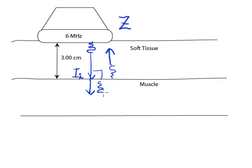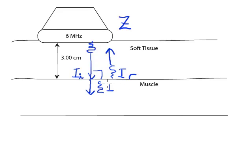The transmitted part will keep going down through the next level of tissue. It's this reflection that the transducer is going to be able to detect and plot, and that's going to be how we generate an image using ultrasound. We're going to call the reflected intensity I sub r, and the transmitted intensity I sub t.